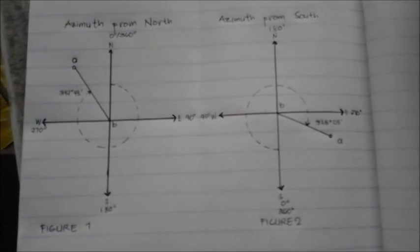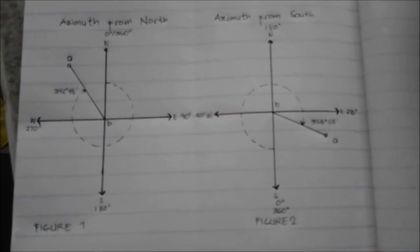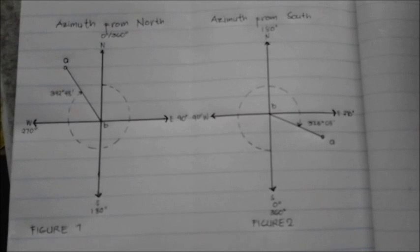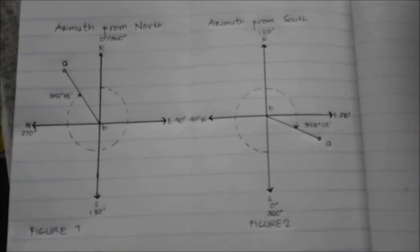For large-scale geodetic surveys and in astronomical observations, azimuths are measured from the south branch of the meridian.